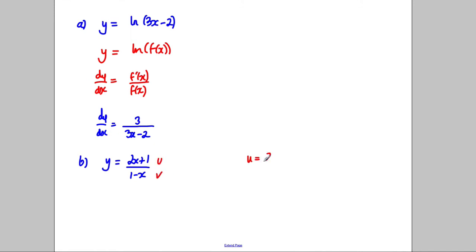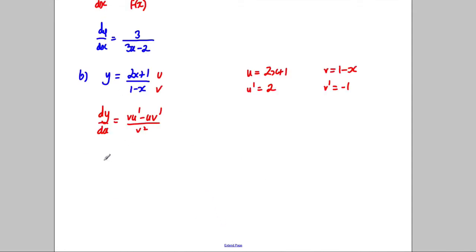So therefore, this is your u and that's your v. So your u is equal to 2x add 1. Therefore, your u dash, your differential is 2. Your v is equal to 1 subtract x. And be very careful here, your v dash is therefore negative 1. Someone might forget that. And the rule we're using, so the rule we're going to use is dy/dx is vu' subtract uv' divided by v squared. Okay, so now it's just a substitution game.